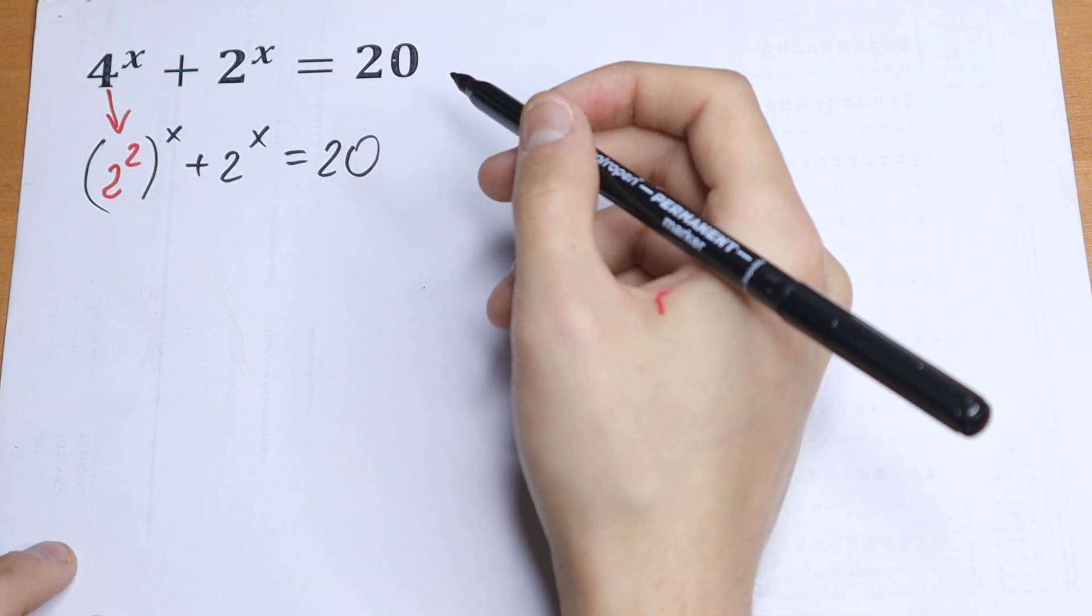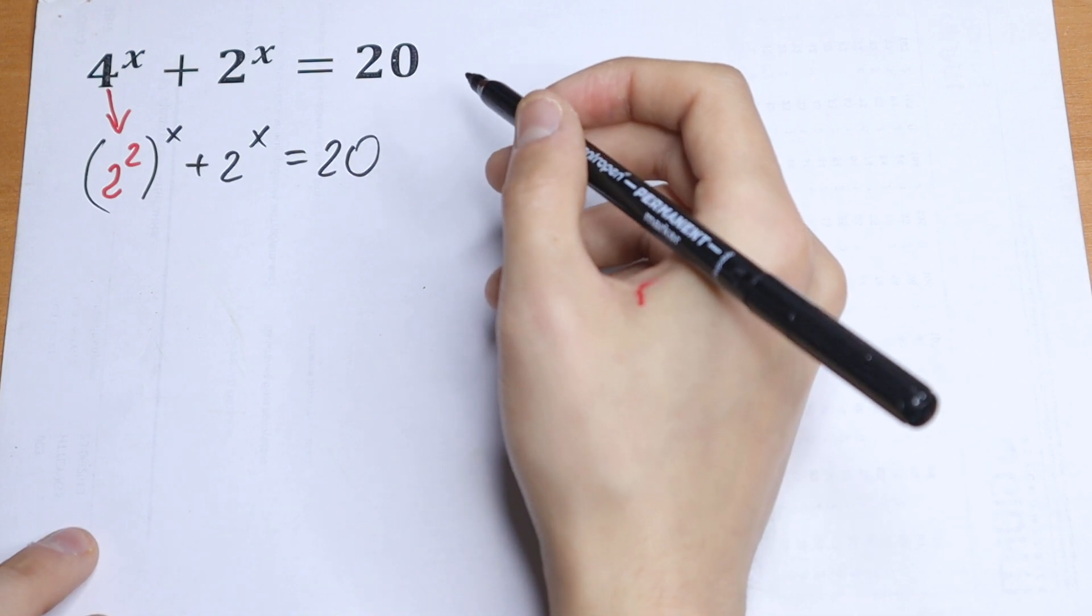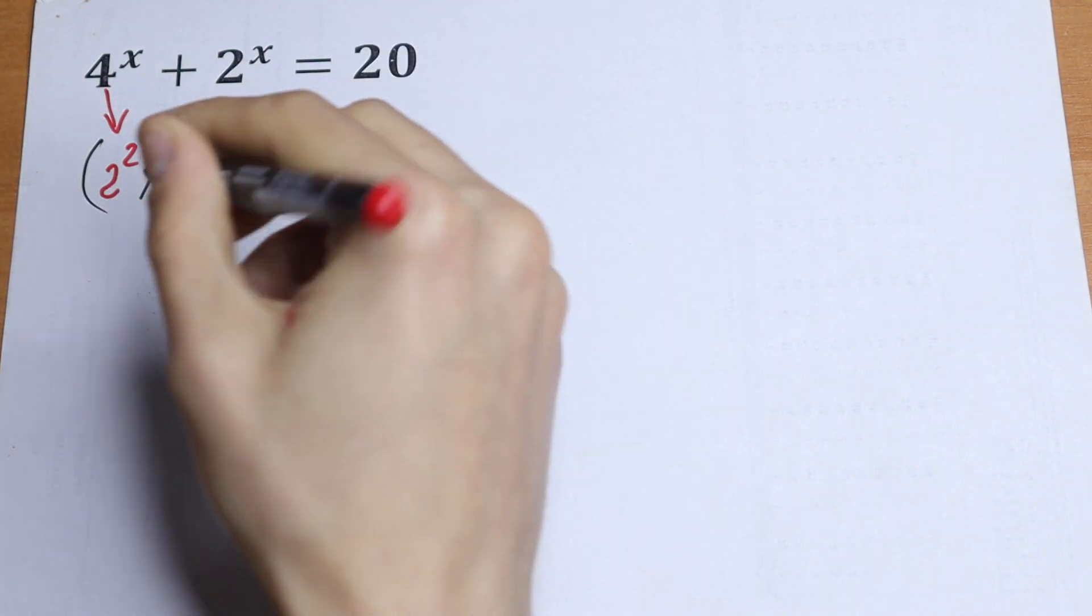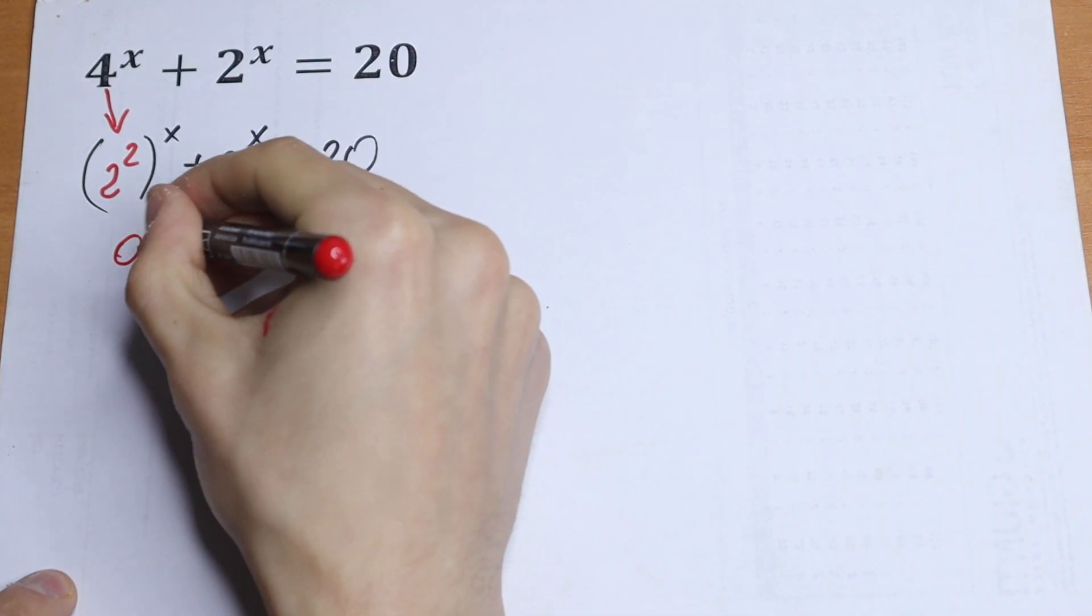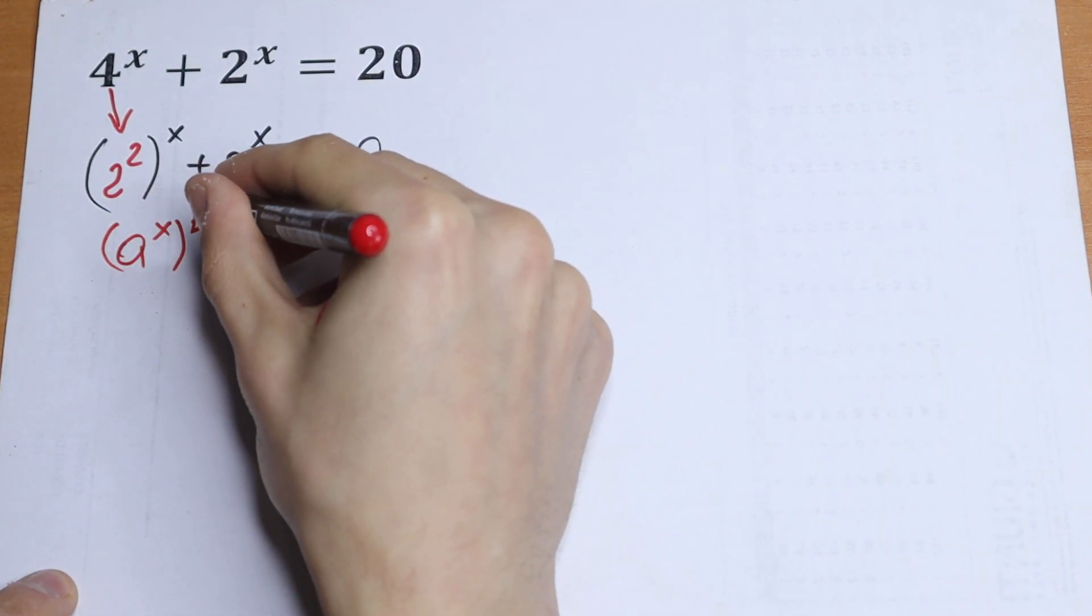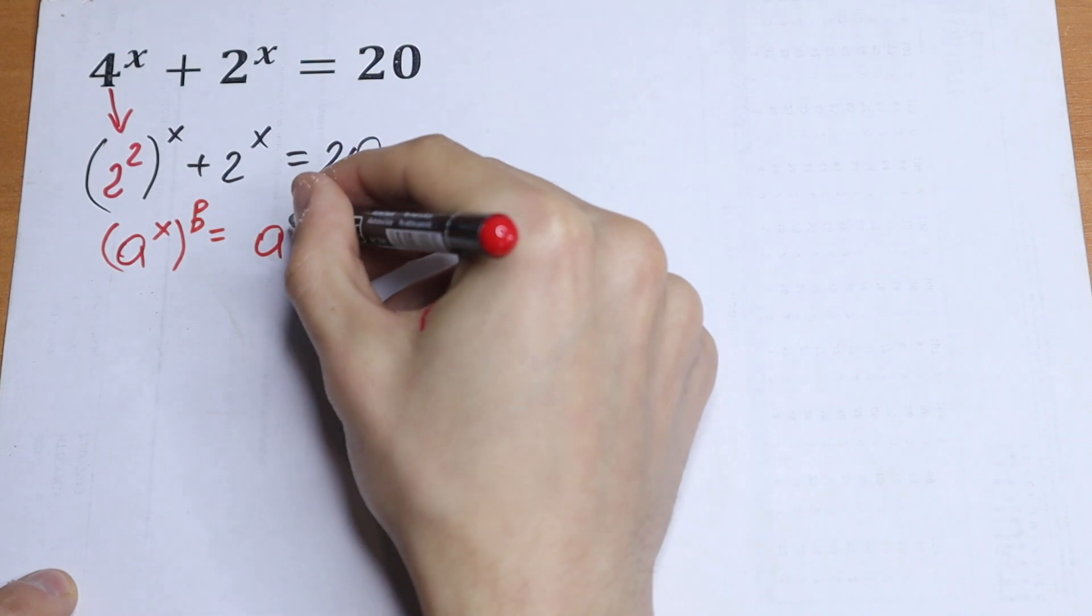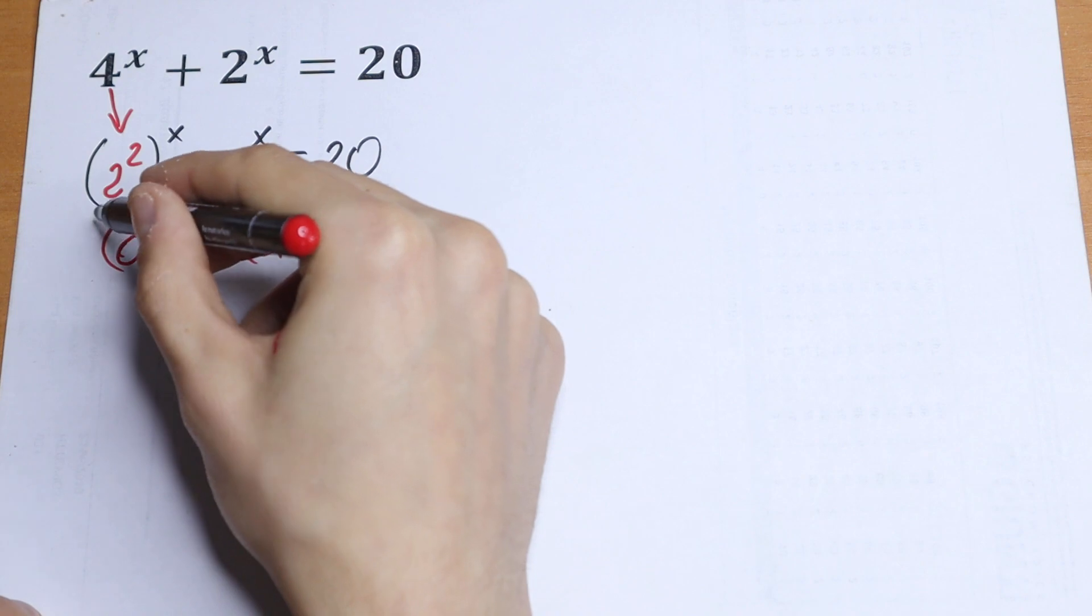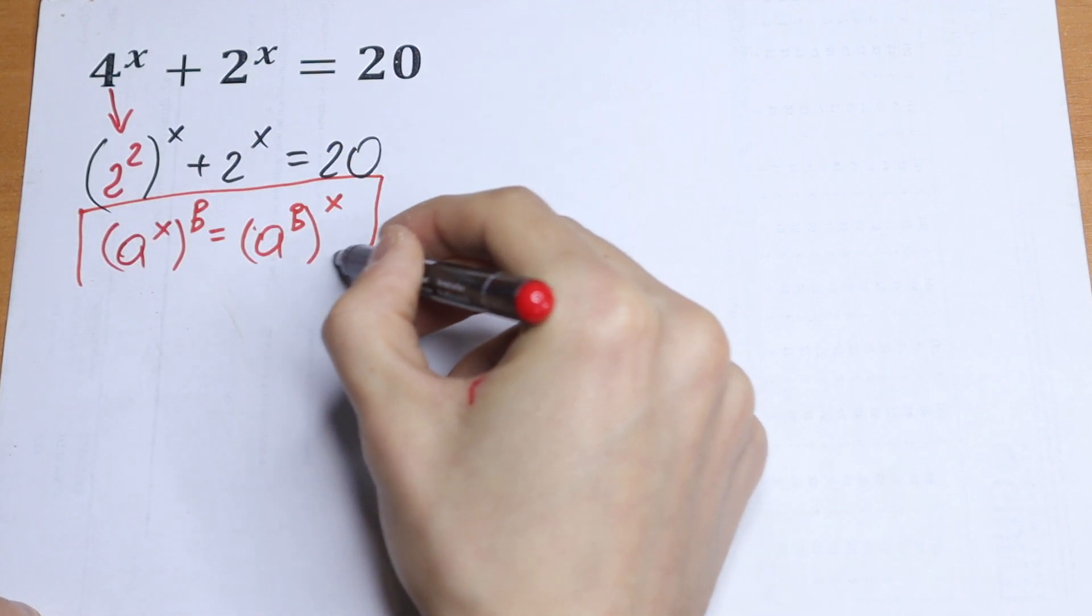What are we going to do next? You should know about the rule of interchange, so we can swap this exponent, this power. What is this rule? If we have a to the power x raised to the power b, we can write it as a to the power b raised to the power x. Really good rule, so learn this or remember this.